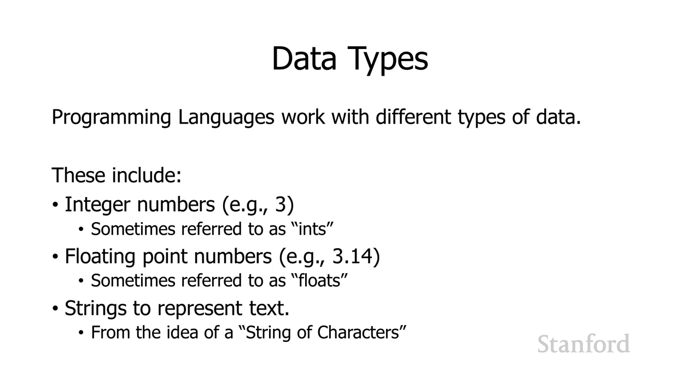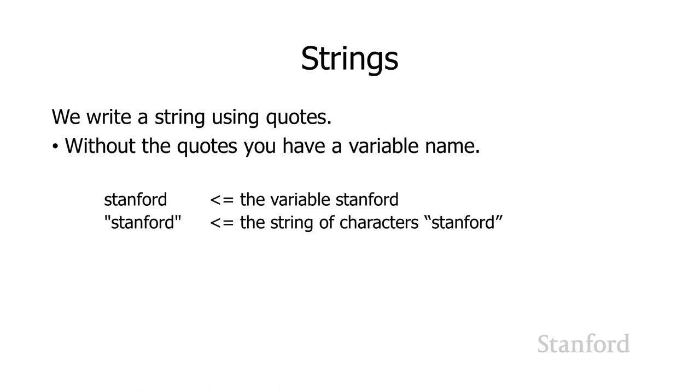Then we have strings, which are used to represent text. The term string comes from the concept of a string of individual characters. When we want to write a string, we're going to use quotes. If we don't have quotes, what we basically have is a variable name. If I just see the word Stanford by itself with no quotes, that is actually referring to the Stanford variable. Python would see the word Stanford and say, you must have a storage location or variable name Stanford. Let me try and retrieve the value in that storage location. If you put quotes around Stanford, it says, that's the string of characters Stanford. You must be wanting to manipulate and work with text.